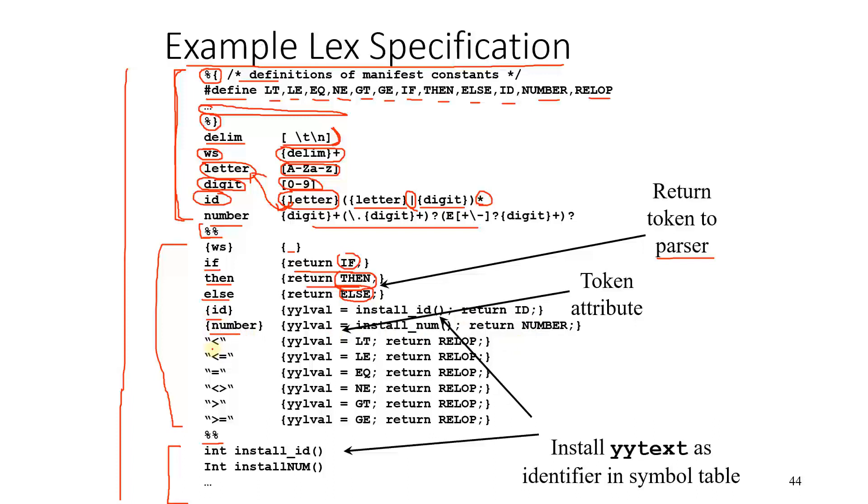Then we have identifiers, numbers, some relational operators like less than, less than equals to. It returns the yylval, that is LT. We have written here LT, check this if you can see my mouse pointer very well. This is LT, this is LT, and this returns a relational operator rel op. We have also defined the rel op over here. This yylval is the token attribute, whatever attribute it is storing is going to be placed in here.